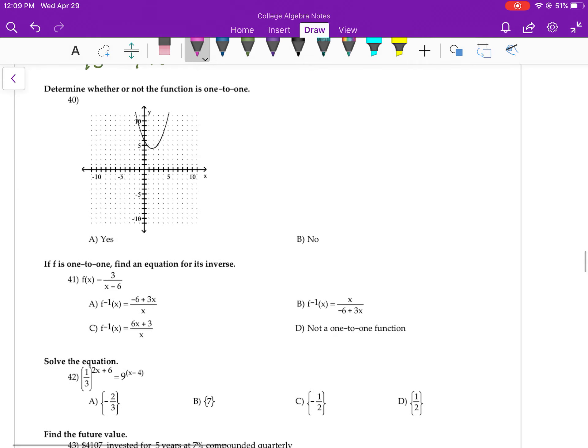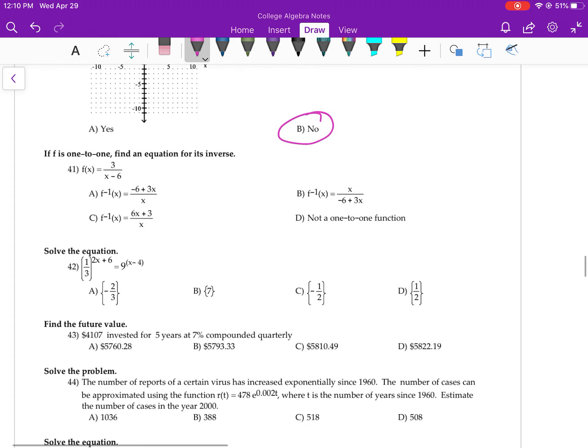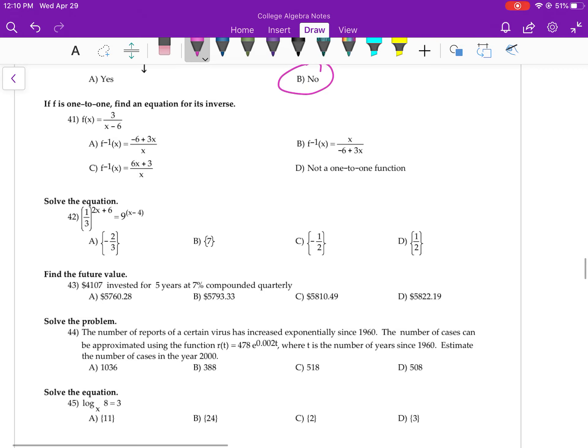Number 40. This function is not 1 to 1 because it fails the horizontal line test. Number 41. This is 1 to 1. It does have an inverse. You guys graphed these in chapter 4. So that should not be an issue. It has an inverse. Find it.